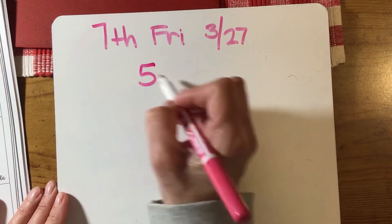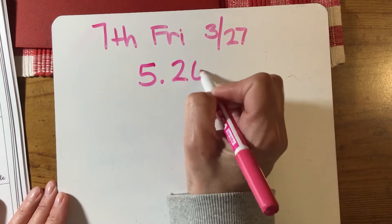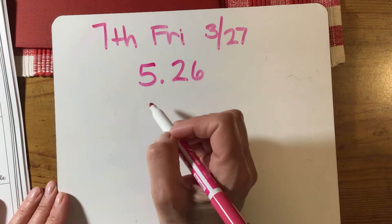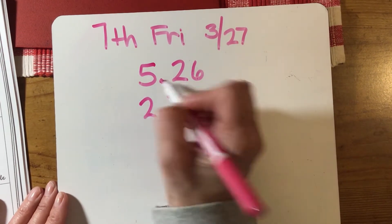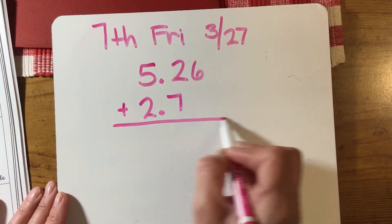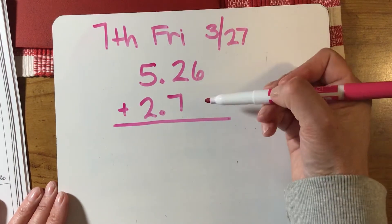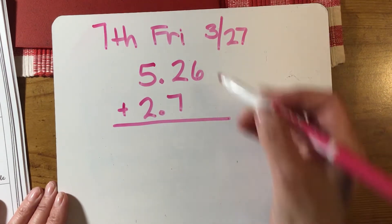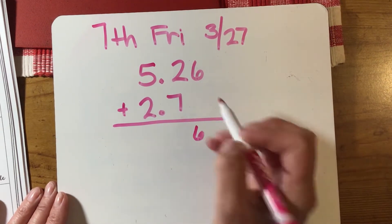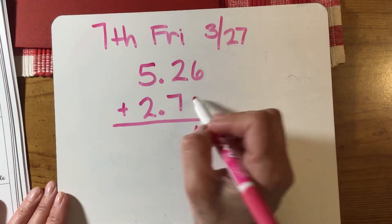Because I'm using it from your packet, this question will not be on Google Classroom. For addition, you want to set up the problem vertically like this and line your decimals up, and then simply add. There's an imaginary zero there—you can put a zero there if you want to, but you don't have to.